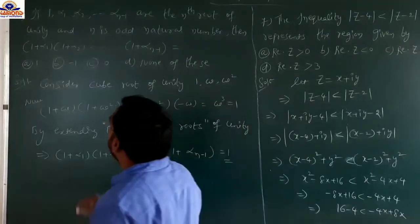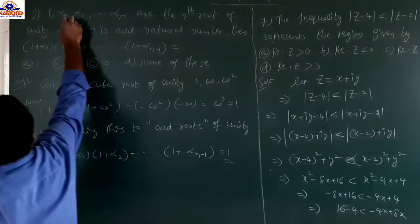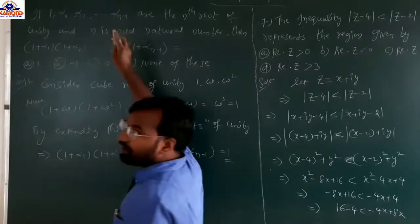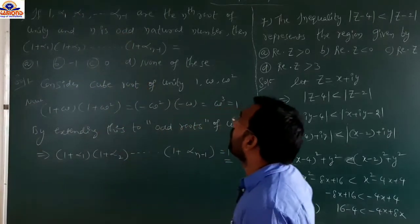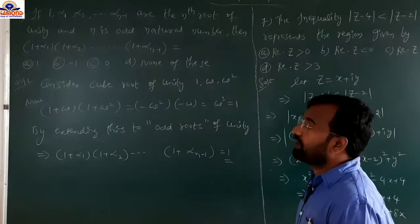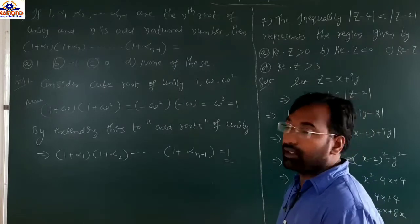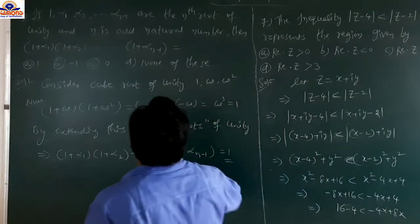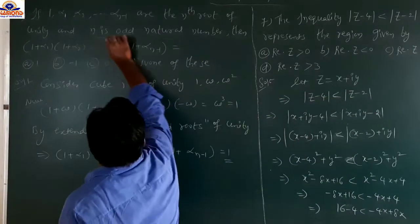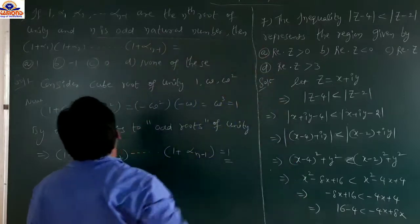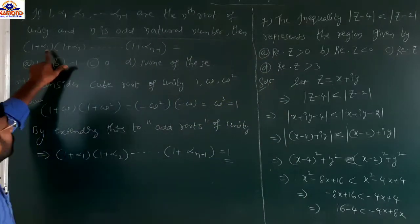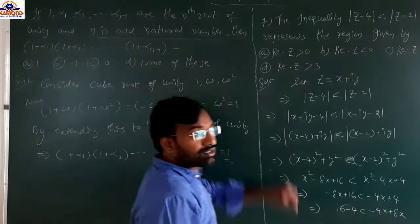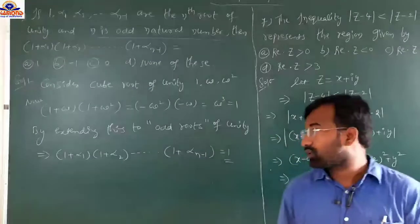If 1, α₁, α₂, ..., α_{n−1} are the nth roots of unity, and n is an odd natural number, then (1+α₁)(1+α₂)···(1+α_{n−1}) equals what?